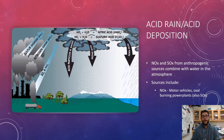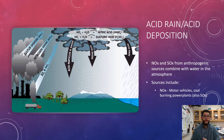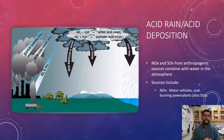Your sources can be your NOx chemicals — things like motor vehicles, burning power plants — and also your SOx chemicals as well. Those end up mixing and forming things like nitric acid and sulfuric acid.